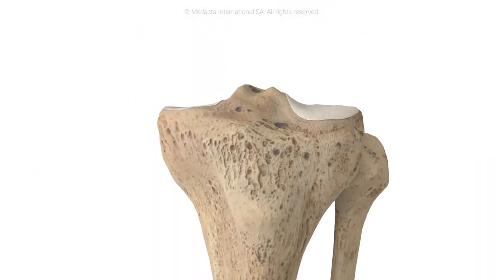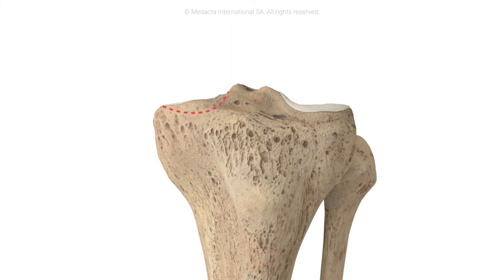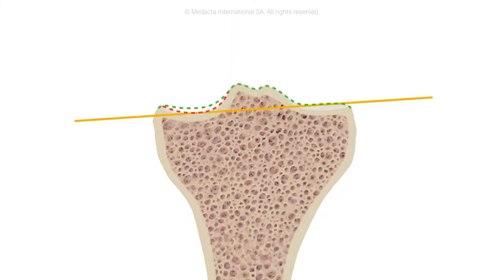The same technique is then applied to the tibia. Cartilage wear is compensated on the worn side to align the component to the native joint line.